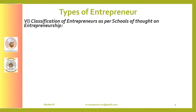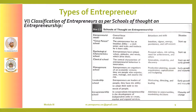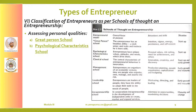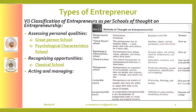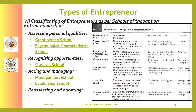The next type of entrepreneur classification is based on schools of thought on entrepreneurship, classified into four types: assessing personal qualities, recognizing opportunities, acting and managing, and reassessing and adopting. Under assessing personal qualities we have the great person school and psychological characteristics school. Under recognizing opportunities we have the classical school. Under acting and managing we have the management school and leadership school. Under reassessing and adopting we have the intrapreneurship school of entrepreneurship.